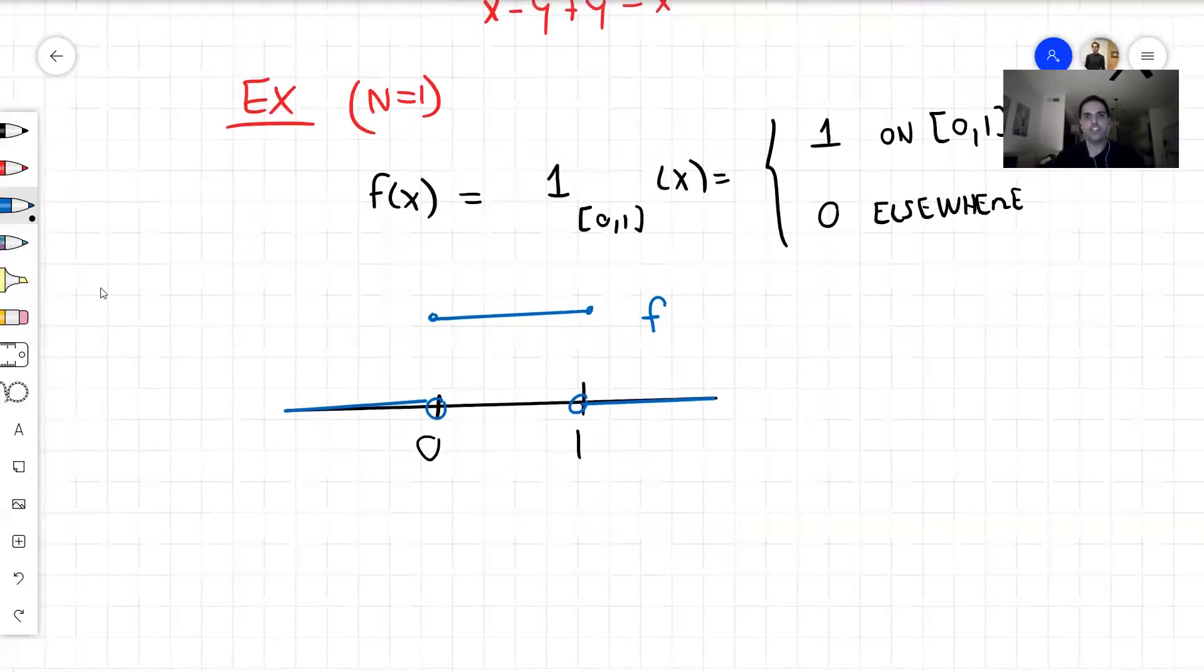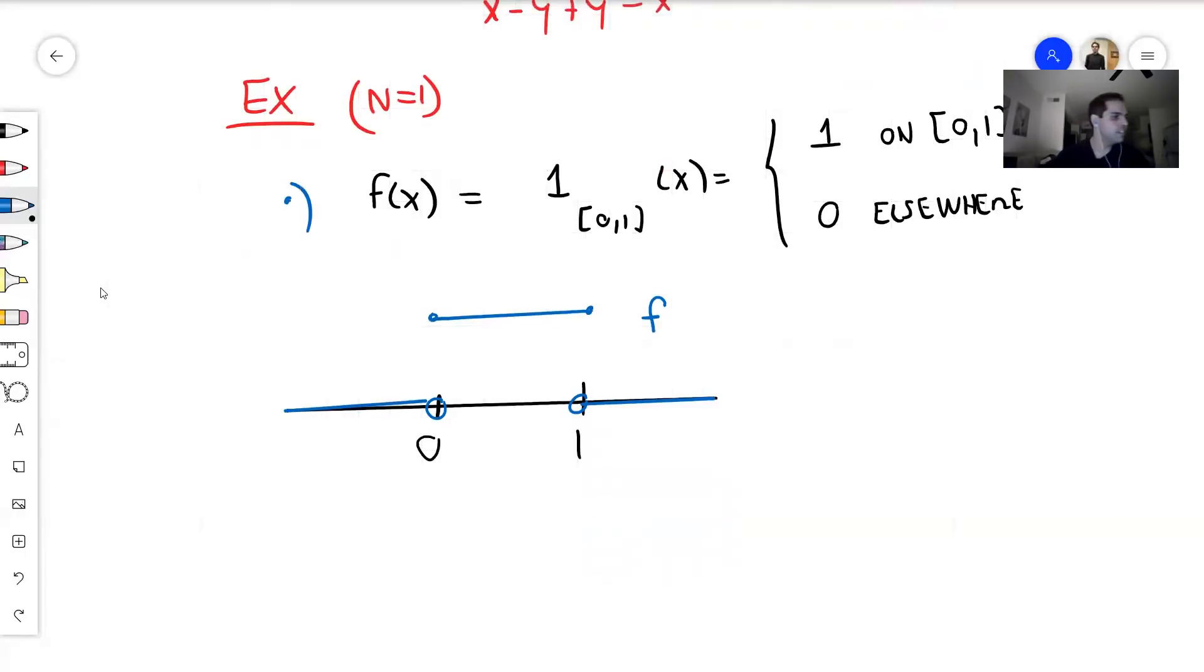And then on the other hand, consider g to be e^x. g(x) equals e^x, which again, it just looks like that, e to the x.